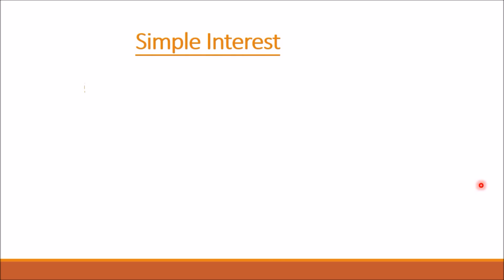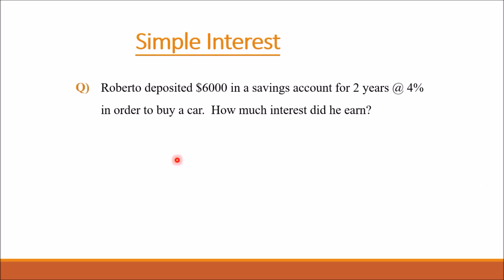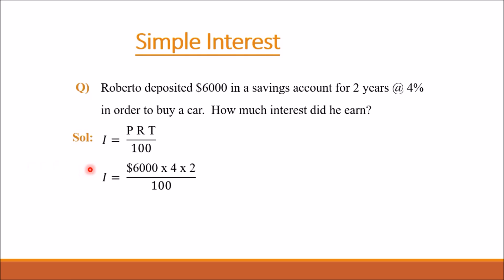Let's have a question about simple interest. Roberto deposited $6000 in a savings account for 2 years at the rate of 4% in order to buy a car. How much interest did he earn? To find the interest amount we use the formula I equals PRT over 100. Here the deposited amount is $6000, which is the principal amount P.